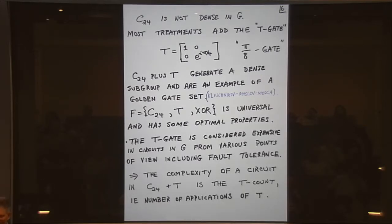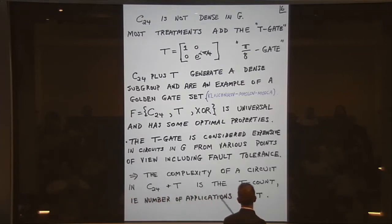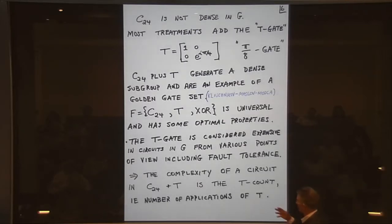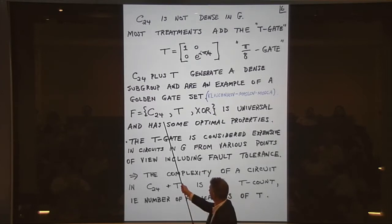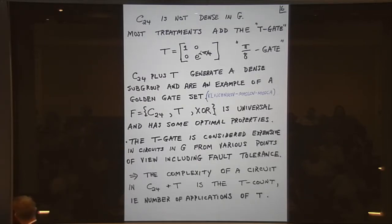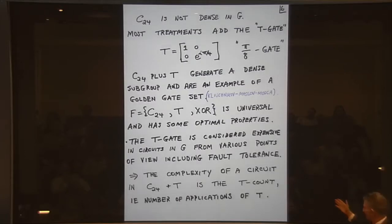If anybody ever builds a quantum computer, this is the kind of gate you need to build. Moreover, from physical considerations, the finite group part — the C24 Clifford group with the Hadamard and Pauli gates — can actually be built with a classical computer. As a consequence, it has become natural in the subject to only count the cost of a circuit by how often you apply this T gate. That's the hard gate to implement. So the complexity of a circuit is just the number of applications of T.